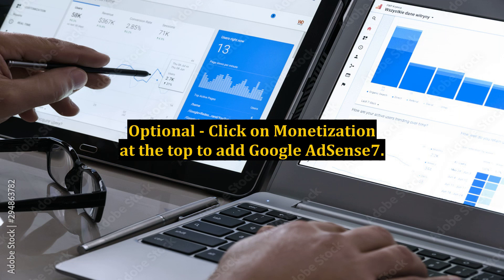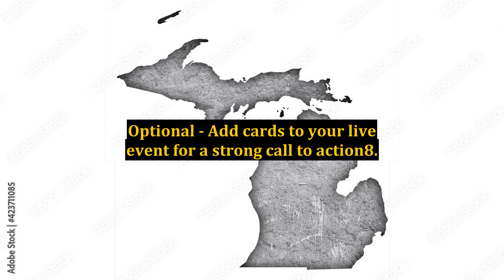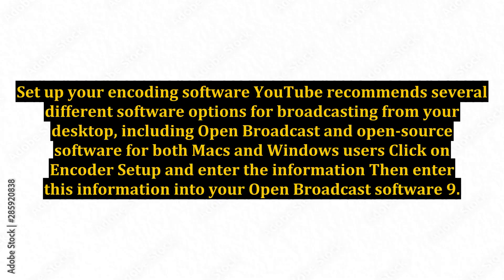Step 6: Optional — click on monetization at the top to add Google AdSense. Step 7: Optional — add cards to your live event for a strong call to action.